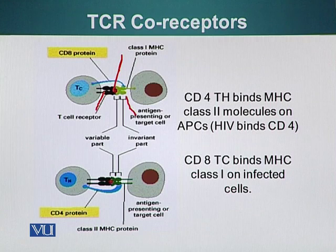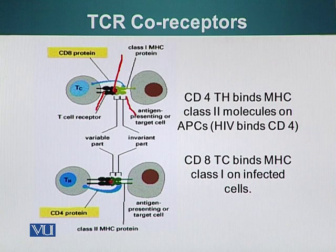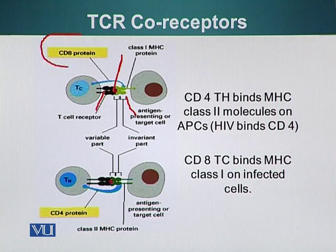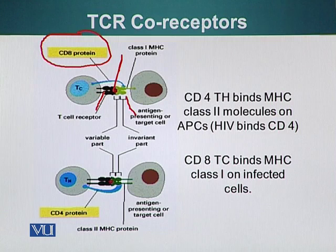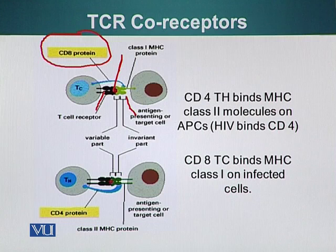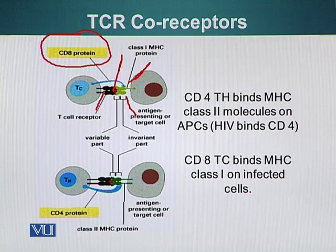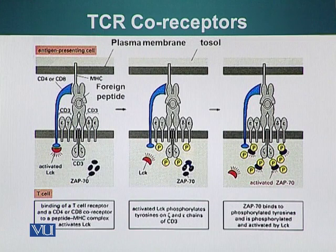Cytotoxic T cells go and destroy cells infected by an intracellular pathogen. Helper T cells help other cells mediate an immune response. Cytotoxic T cells have a co-receptor called CD8. The CD8 co-receptor stabilizes the interaction of the TCR and MHC molecule carrying a foreign antigen. The co-receptors bind the invariable region of the MHC molecule, and their purpose is stabilizing this interaction.